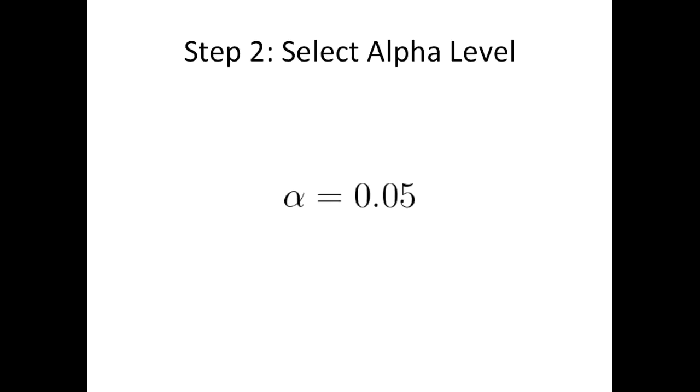Step 2: select alpha level. In our scenario, the alpha level was not given to us. Unless you're in a situation where making a type 1 error could have greater consequences, you typically use an alpha level of 0.05.